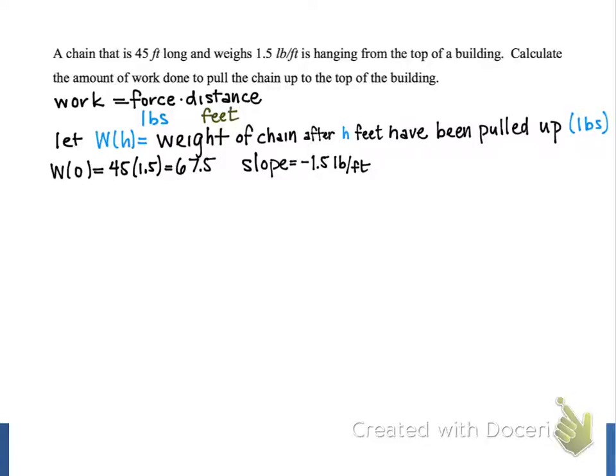When we put this information together, our result for the weight function is w(h) = -1.5h + 67.5.